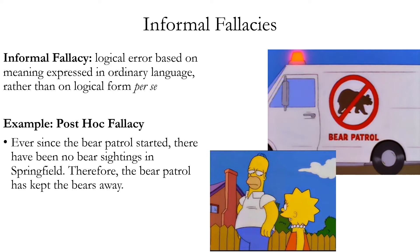Post-hoc arguments assume that because one event or factor came before another event or factor, the first must have caused the second. Here's a particular illustration: Ever since the bear patrol started, there have been no bear sightings in Springfield. Therefore, the bear patrol has kept the bears away. This ignores other possible explanations — maybe there were never any bears in the first place, or maybe the bears went away for some other reason.